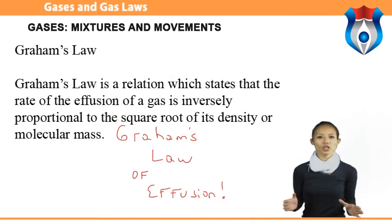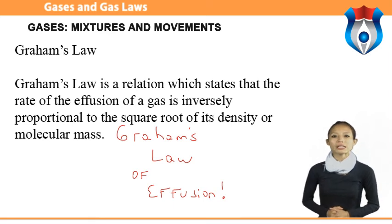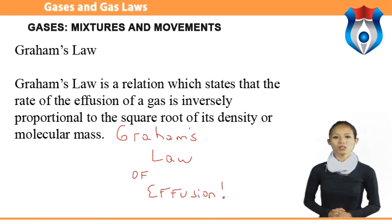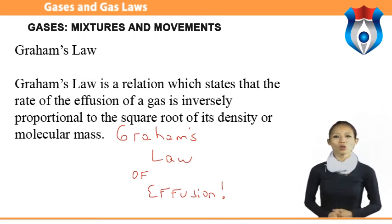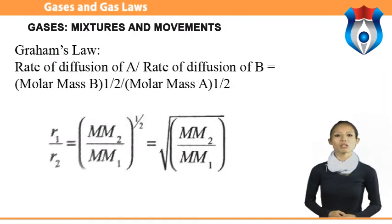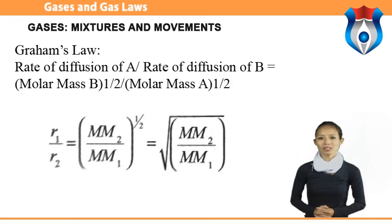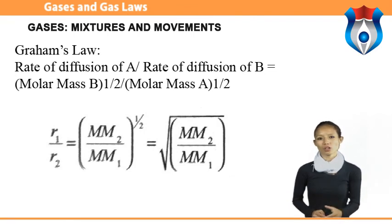Graham's law: a relation which says that the rate of effusion of a gas is inversely proportional to the square root of its density or molecular mass. Graham's law of diffusion and effusion depends on relative velocities of gas molecules. Diffusion is a natural tendency for mobile particles — gas and liquid — to travel from areas of high concentration to areas of low concentration by gradual mixture, by virtue of their kinetic properties. Graham's law is written as: rate of diffusion of A / rate of diffusion of B = √(molar mass B) / √(molar mass A).